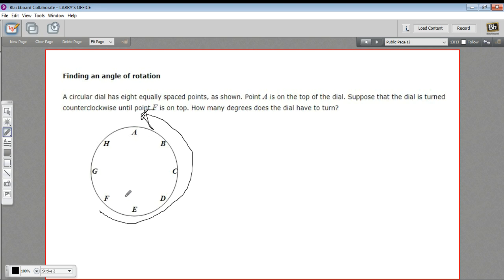Well, the first thing to do is to figure out how much one of these letter spaces is. We're told that the circle is divided into eight equal parts. So we can just take the total circle, which is always 360 degrees, and divide it by eight. So that's 45.